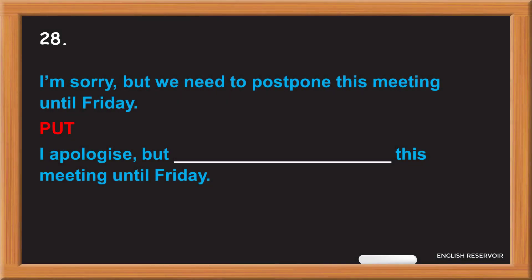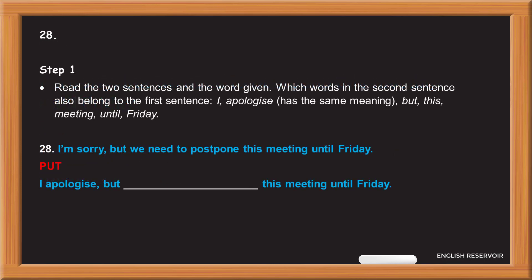I'm sorry but we need to postpone this meeting until Friday. Put. I apologize but this meeting until Friday. Step 1: read the two sentences and the word given. Which words in the second sentence also belong to the first sentence? I apologize has the same meaning. But, this meeting, until Friday.